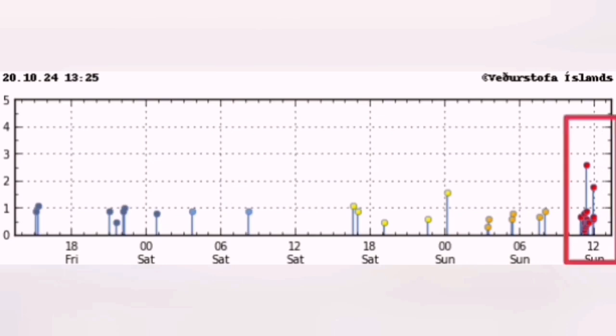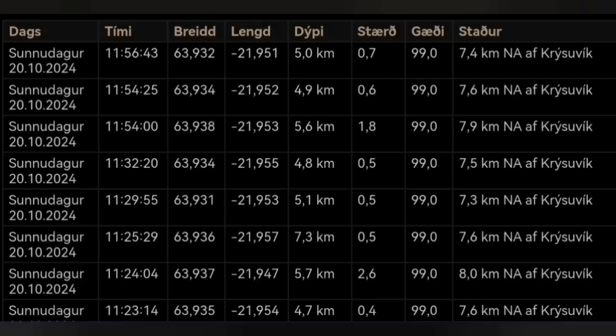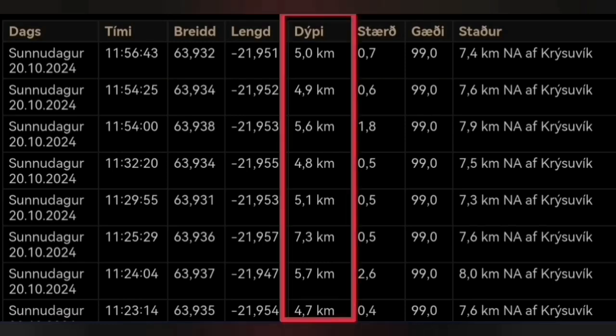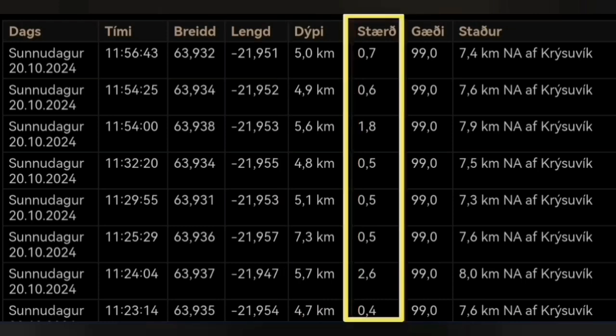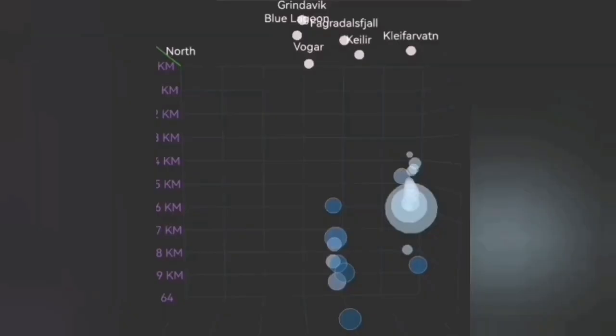When we look at the data closely, we see the depth of them is interesting. I have marked them here. You can see the depth of 5 to 7 kilometers, and the magnitude is written here. They're quite small. When we plot them on a chart in three dimensions, you can see that they are restricted to a depth of 7 to 5 kilometers.